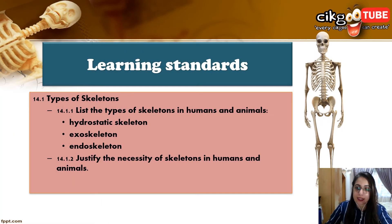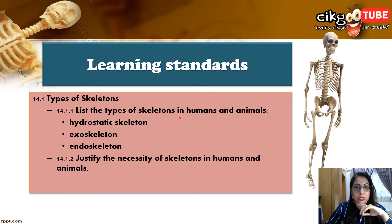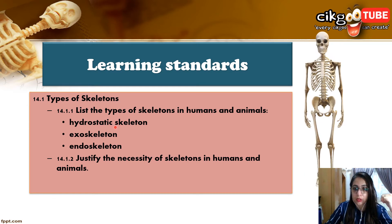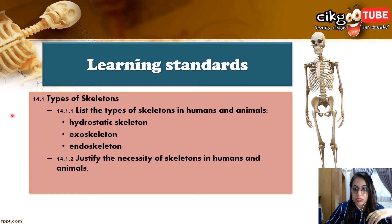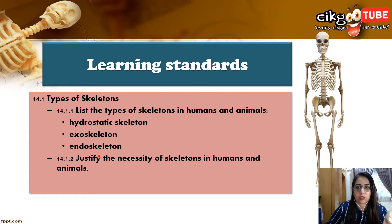Let's look at the learning standard first before we move on. You are supposed to be able to list the types of skeleton in humans and animals. We have three types of skeletons: hydrostatic skeleton, exoskeleton, and endoskeleton. You must know what each of these skeletons is, and also be able to justify the necessity of the skeletal system in humans and animals.